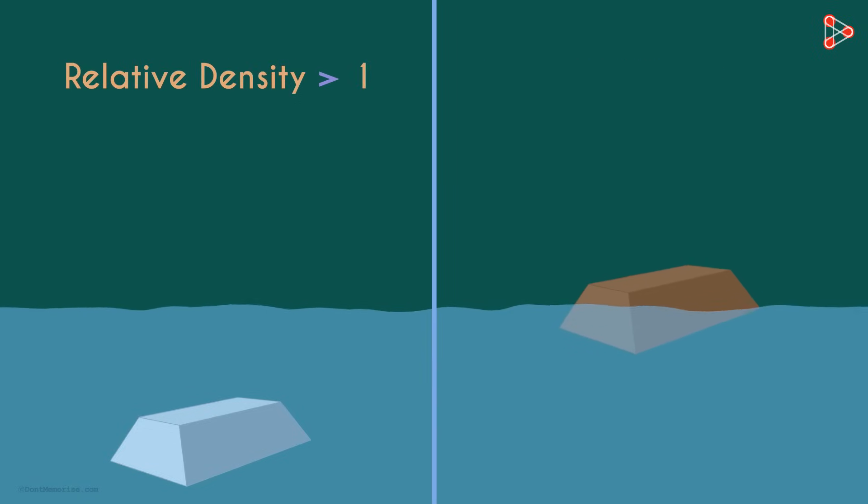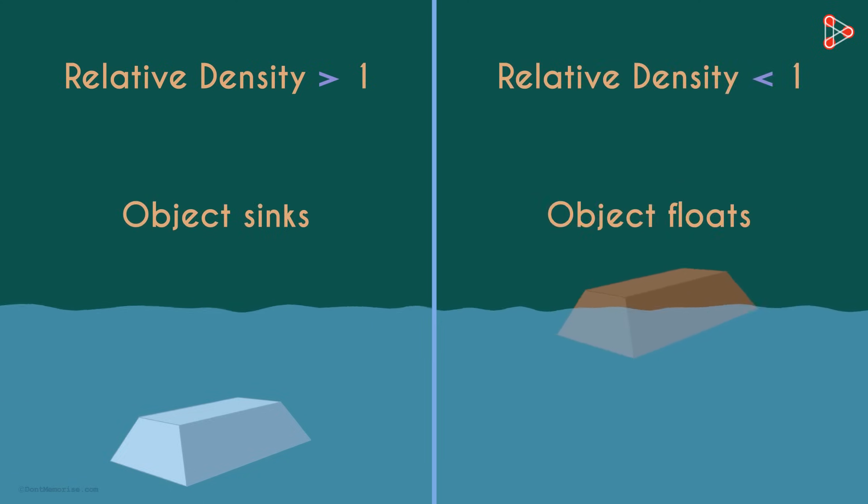If the relative density of a substance is greater than 1, then it will sink. And if it's lesser than 1, it will float. As the relative density of silver is 10.5 which is greater than 1, it will sink in water.